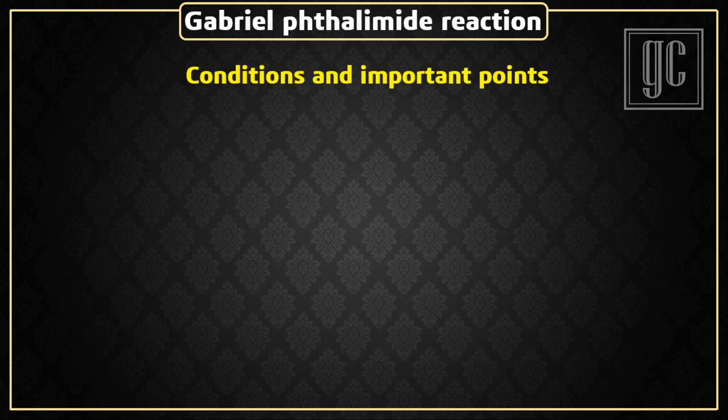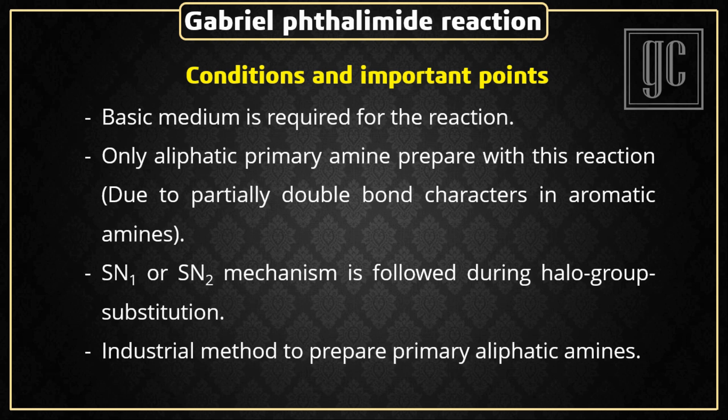The conditions and important points of the reaction: Basic medium is required. Only aliphatic primary amines are prepared with this reaction. SN1 or SN2 mechanism is followed during halo group substitution. This is the industrial method to prepare primary aliphatic amines.